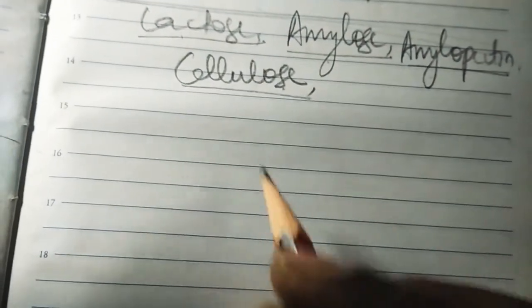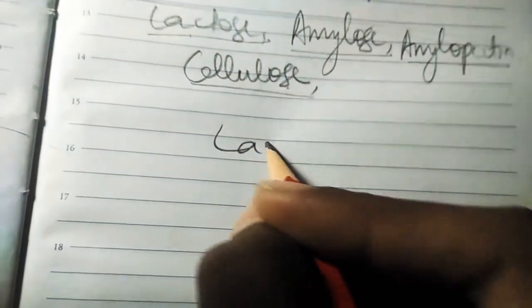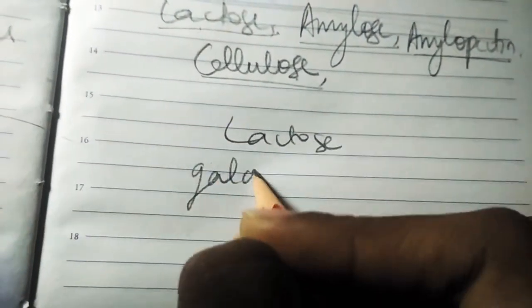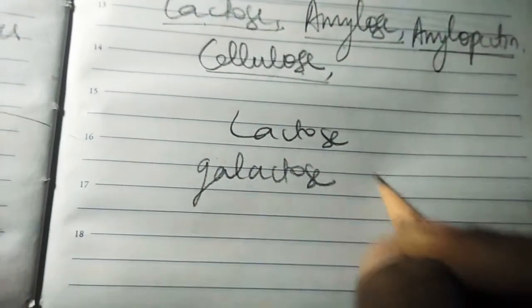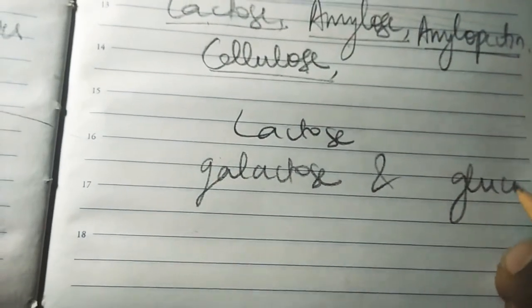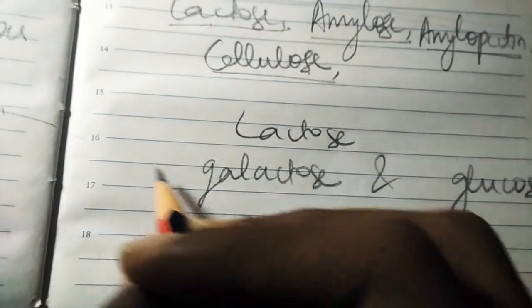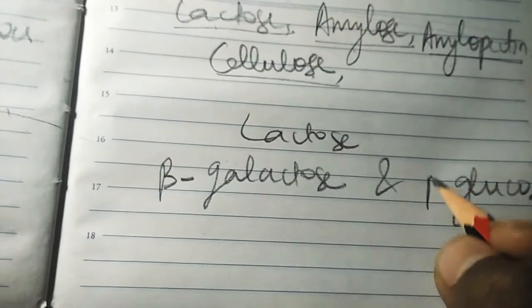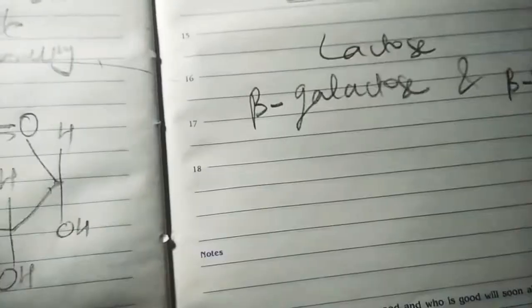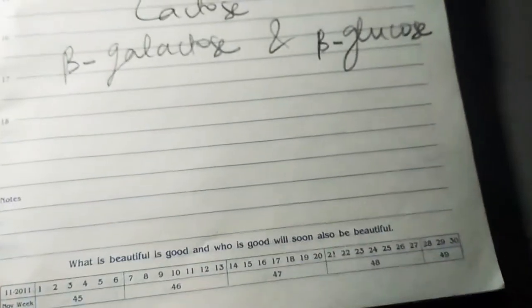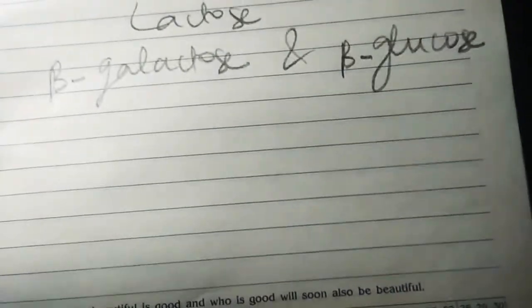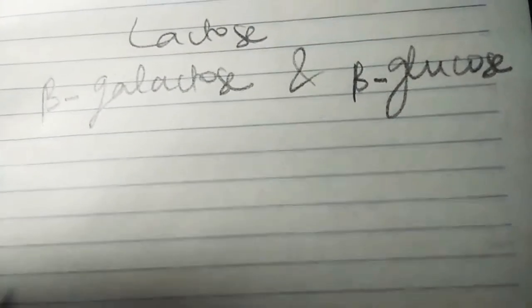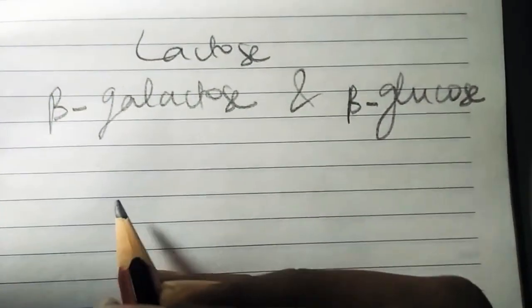So lactose is made up of galactose and glucose. For galactose, it is especially the beta-galactose, and it is beta-glucose. There is a very minute difference between the galactose and the glucose.